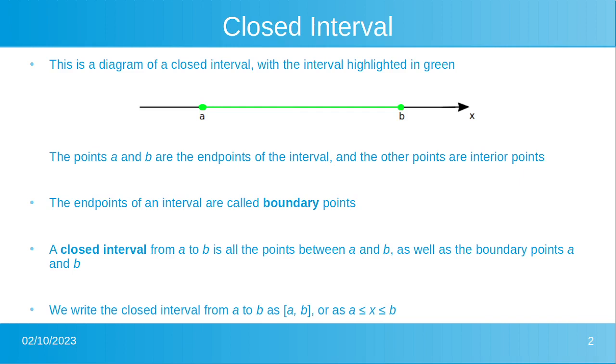The endpoints of an interval are called boundary points. A closed interval from A to B is all the points between A and B as well as the boundary points A and B.